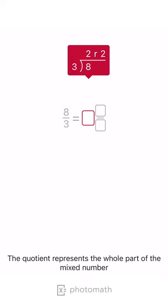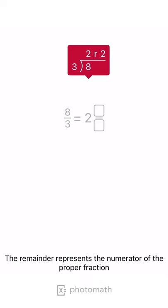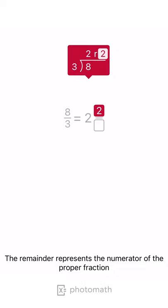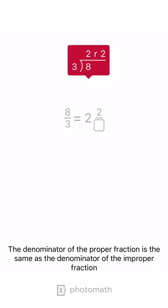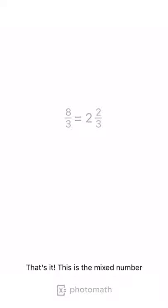The quotient represents the whole part of the mixed number. The remainder represents the numerator of the proper fraction. The denominator of the proper fraction is the same as the denominator of the improper fraction. That's it — this is the mixed number.